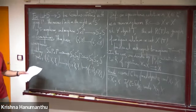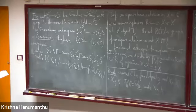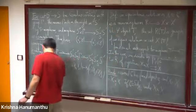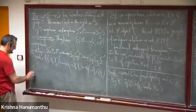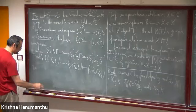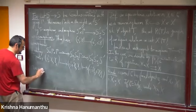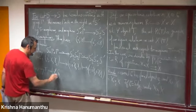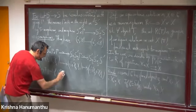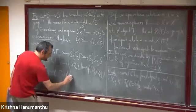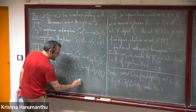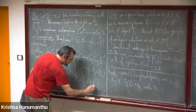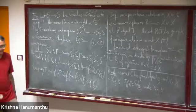This morphism is defined at the level of arbitrary T-points by this action. Any T-point of S'' = S' ×_S S' can be written as (s', s'·γ) for some s' ∈ S'(T) and γ ∈ Γ.